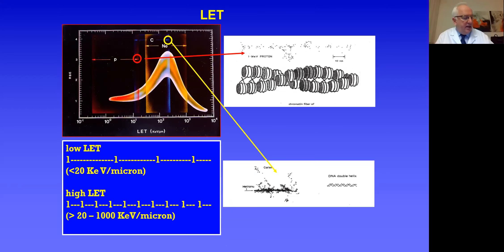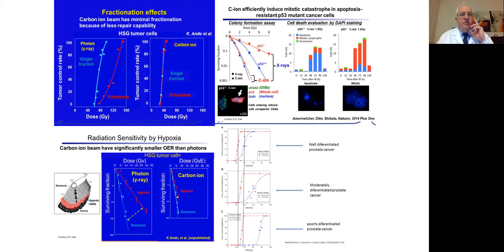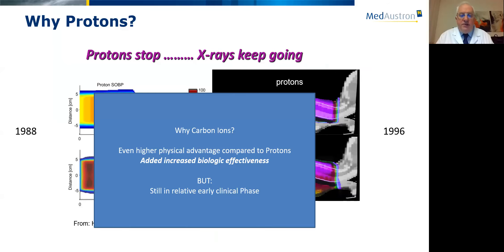Carbon ions carry a higher biologic punch than protons. That expresses itself in the fact that one has very little effect of fractionation, and also little effect in terms of the oxygenation status of the tumor. Carbon ions are therefore effective in particular for hypoxic tumors. Only about 10 to 13 percent of all patients treated with particles are actually treated with carbon ions; the rest primarily with protons.